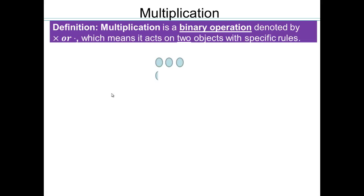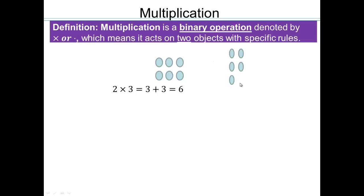If you lay down two rows of three objects, we can write that as 2 times 3. So 2 times 3, we're going to interpret that as two rows of three objects, which is basically 3 plus 3, or 6. We can also look at 3 times 2, so that would be 3 rows of two objects. That would be the same as 2 plus 2 plus 2, three times, which gives me 6. So you can see how with whole numbers, multiplication is really repeated addition.